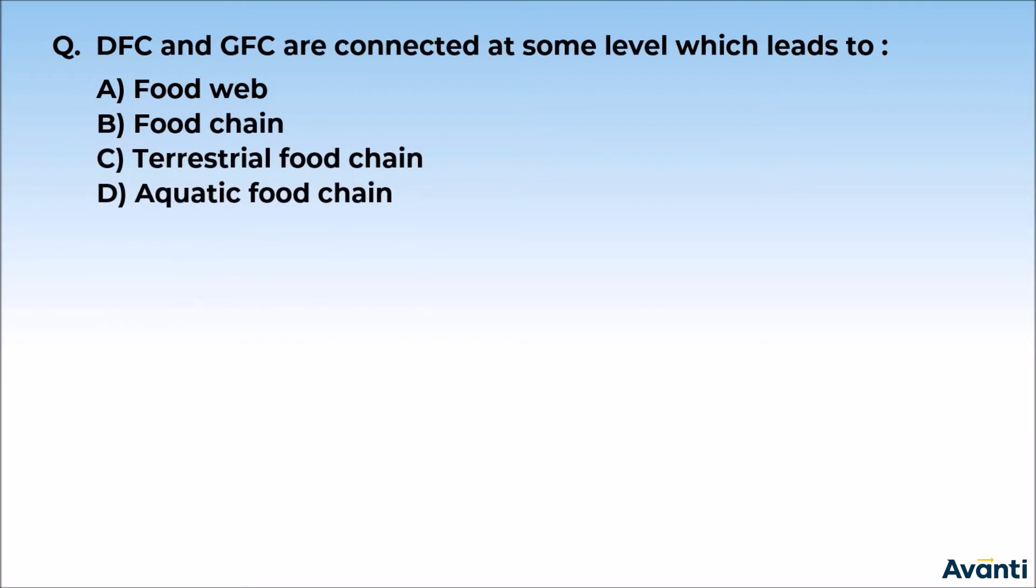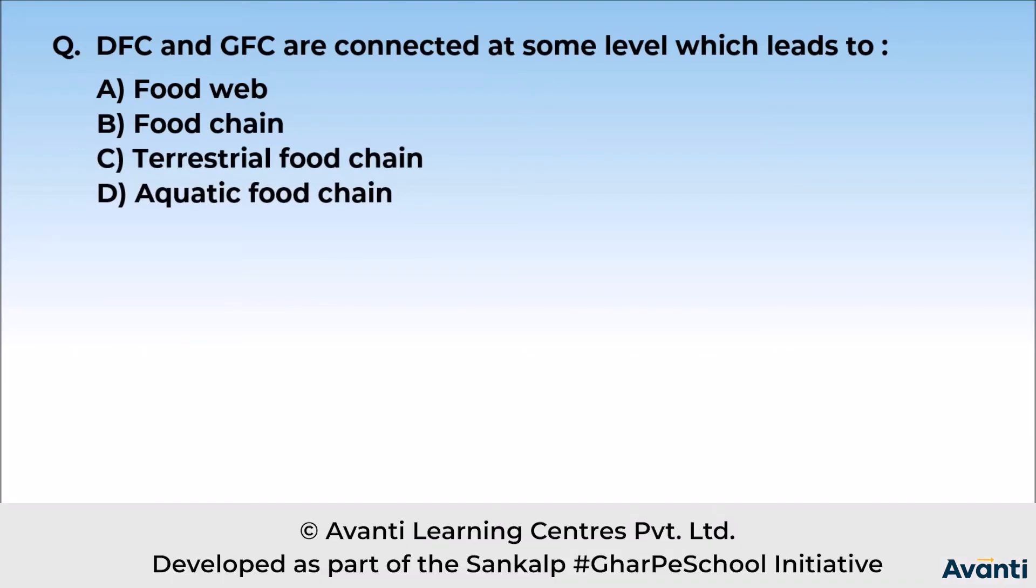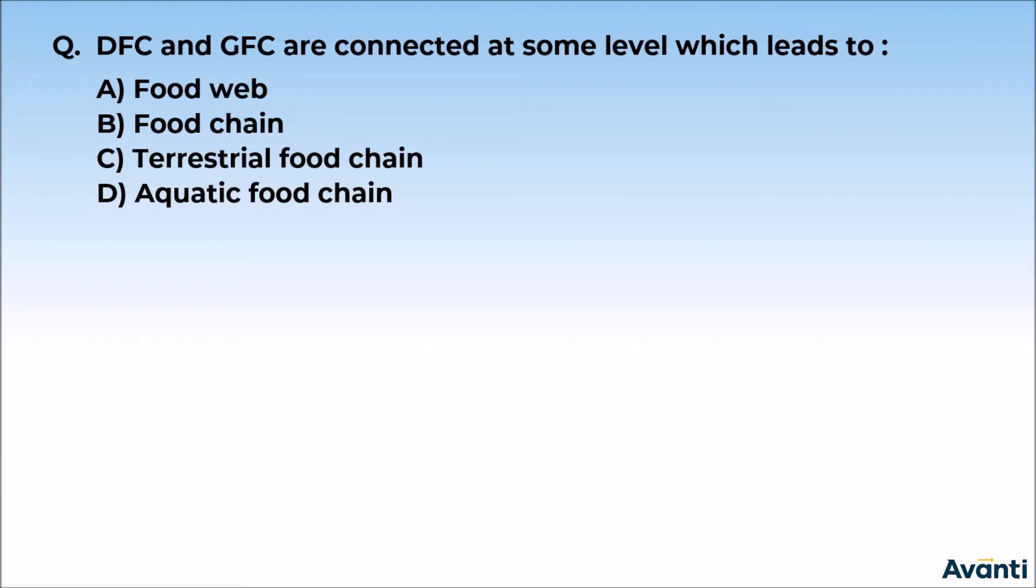So you have to select a correct option in which you have to tell that the detritus food chain and the grazing food chain is going to be a connection.